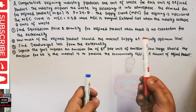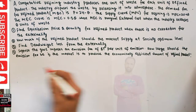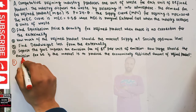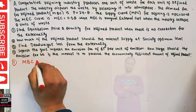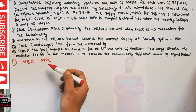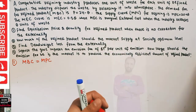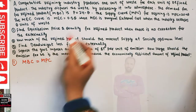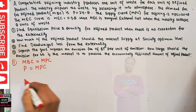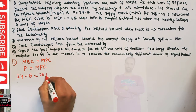For the first part, if we don't take the externality into account, the equilibrium will occur at the point where the marginal benefit curve intersects the marginal private cost. So we simply equate the marginal benefit curve with the marginal private cost. That means P = 24 minus Q should be equal to the marginal private cost, which is 2 plus Q.